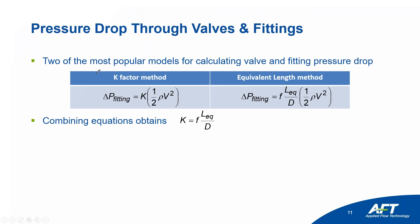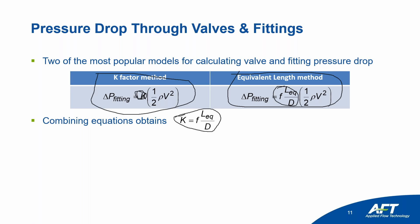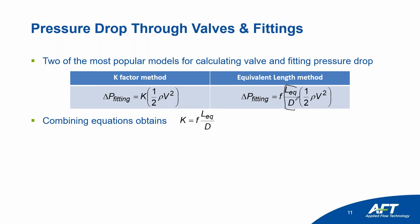The K-factor method sets pressure loss across a fitting equal to K times one-half rho V-squared. It's the more common method with lots of data available, and many K-factor loss models are built into Fathom. The equivalent length method uses an FL/D term to characterize pressure loss across fittings. Combining the two equations shows how K-factors and equivalent lengths relate to each other. A feature introduced in Fathom 9 lets you model equivalent lengths directly when you have them for your fittings.